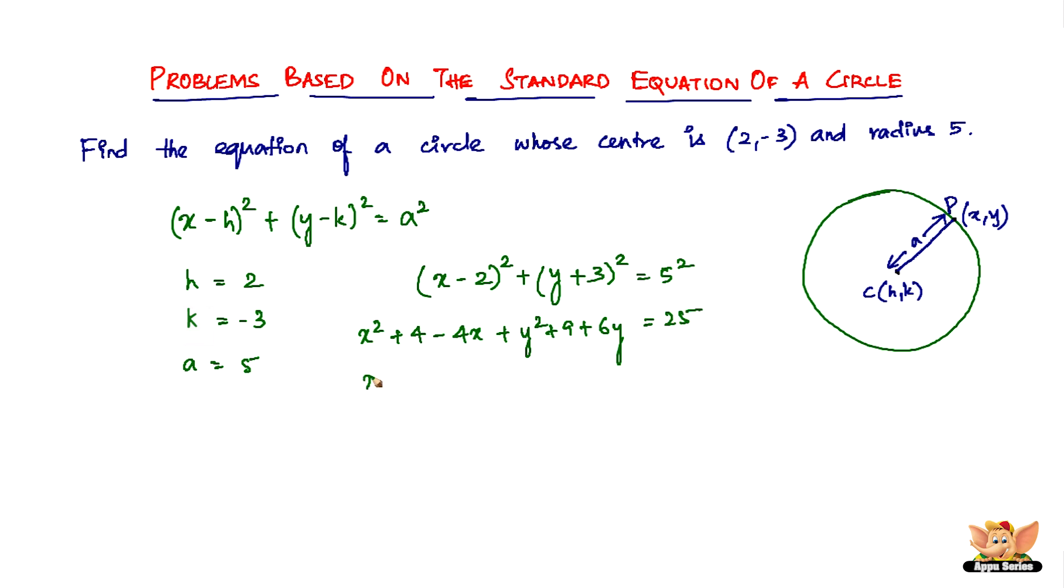And we have x² + y² - 4x + 6y + 4 + 9 - 25 = 0. So x² + y² - 4x + 6y, 4 + 9 is 13 and 13 - 25 is -12. So x² + y² - 4x + 6y - 12 = 0 is the equation of the circle in question.